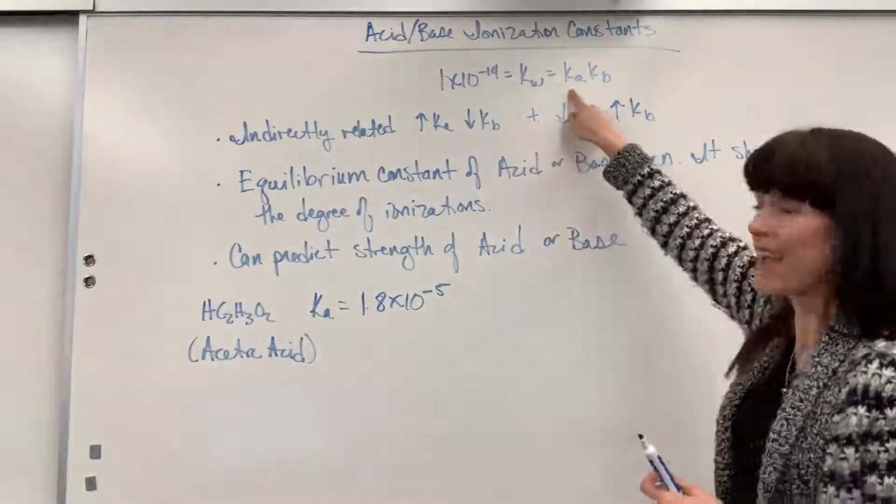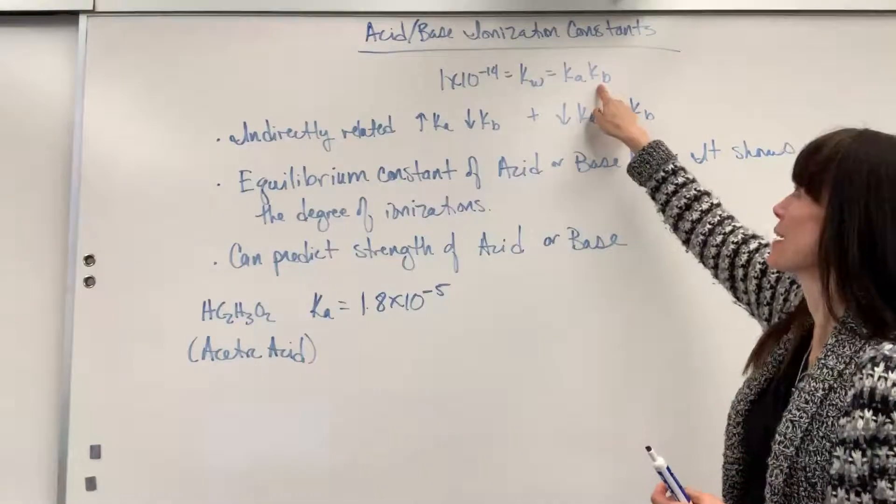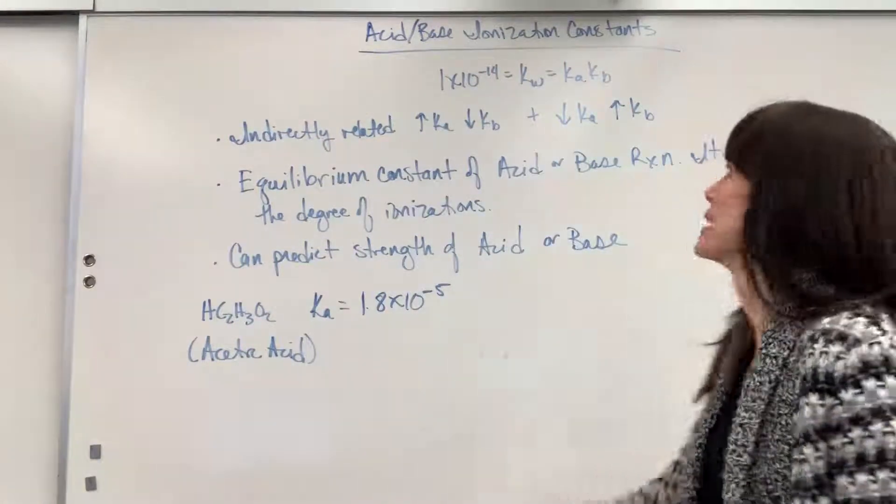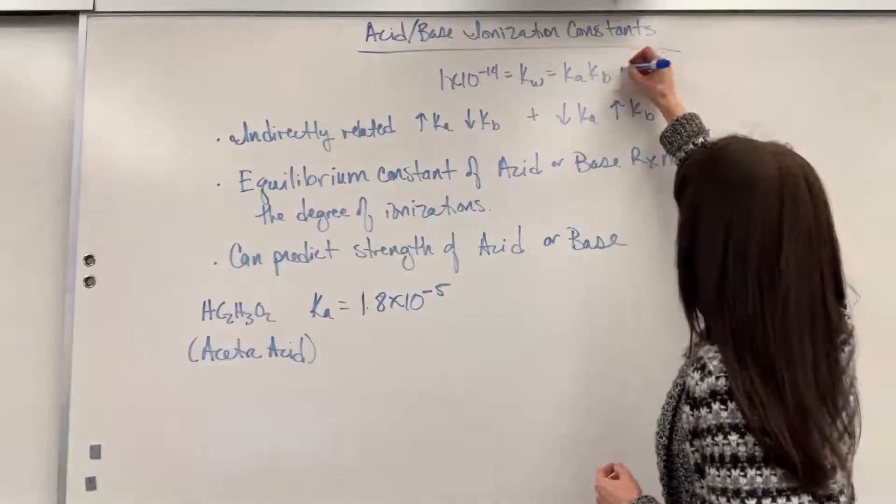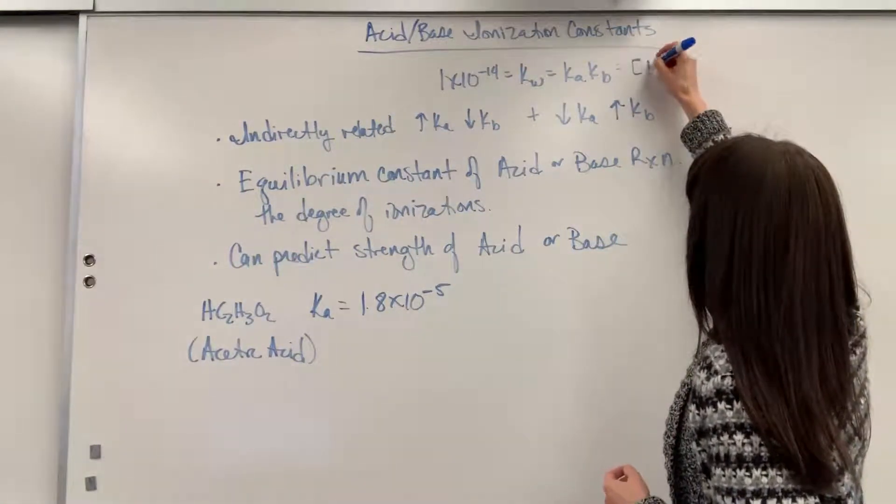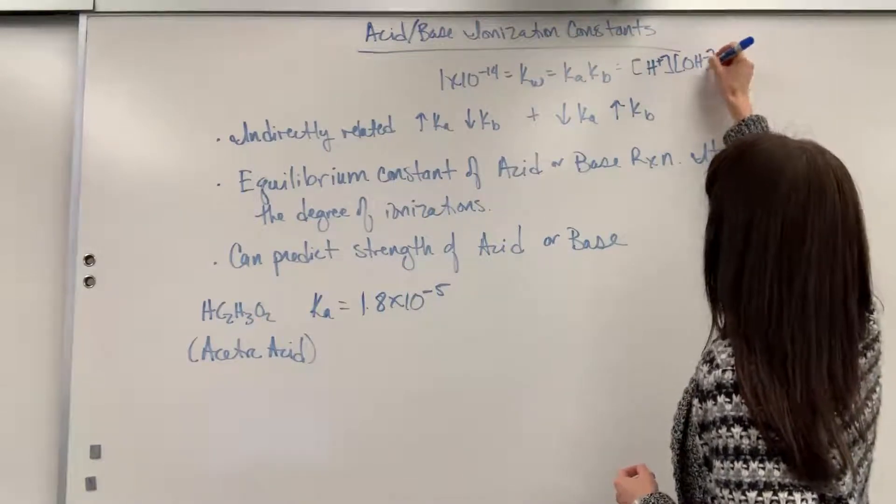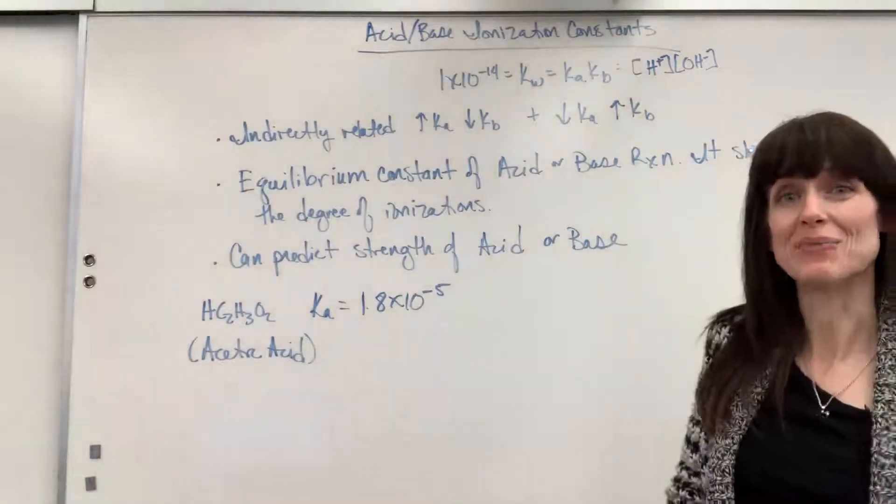Well, if you take Ka times Kb, it equals 1 times 10 to the minus 14. Same thing, you'll recall that this also equals the concentration of the hydrogen ion times the hydroxide ion.